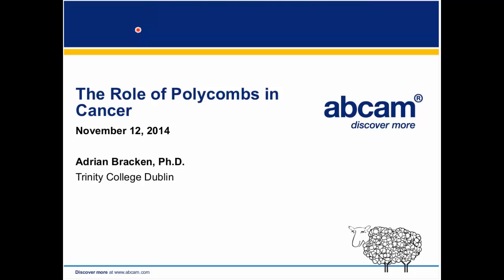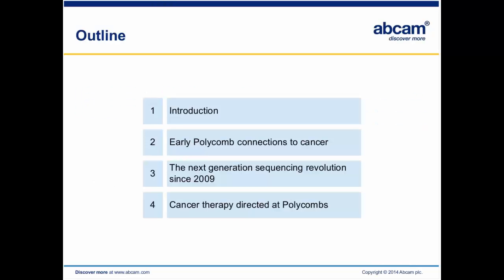It's a pleasure to talk about the role of polycoms in cancer. Today I'm going to break my talk up into four sections. We'll start with an introduction about polycoms, then move on to the early connections between polycom and cancer, then to the more recent revolution since next-generation sequencing found many mutations in genes encoding polycom group proteins — both activating and inactivating. Finally, we'll move towards how we can use this information for new cancer therapies and give a perspective on what I think will happen in the next few years.